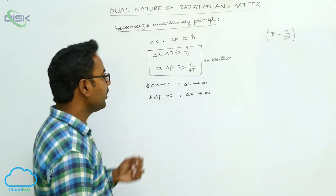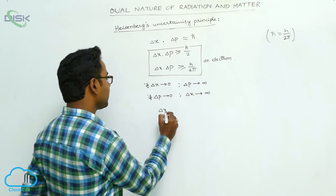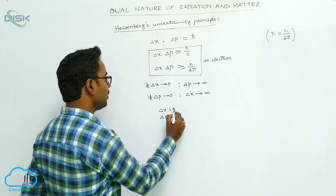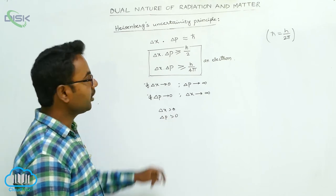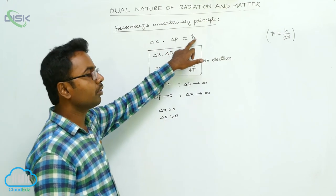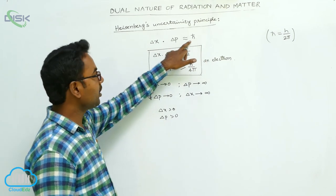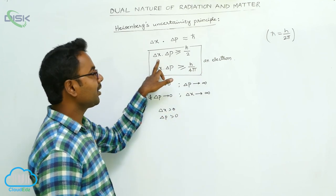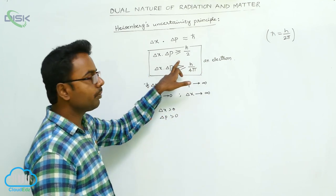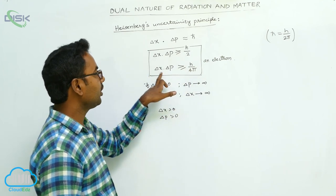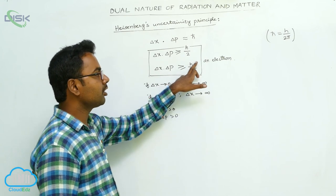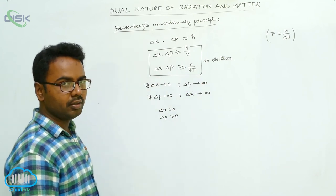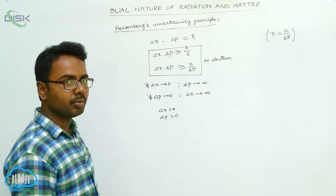And always, delta x and delta p are greater than 0. Their product is always approximately equal to h-cut. This is applicable for any particle. Strictly for an electron, it is delta x into delta p greater than or equal to h-cut, or delta x into delta p greater than or equal to h by 4 pi. This is about Heisenberg's Uncertainty Principle.